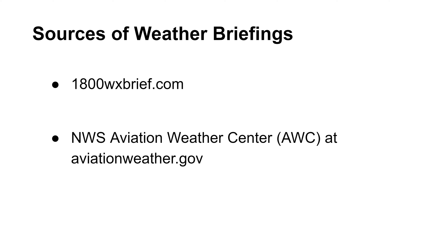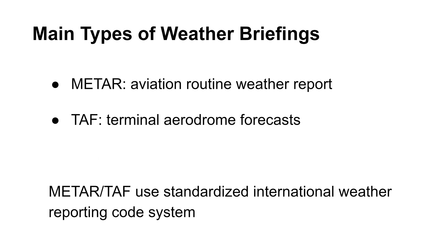The second source of weather reports is the NWS Aviation Weather Center at AviationWeather.gov. Both sources offer two typical types of weather reports: Aviation Routine Weather Report or METAR, and Terminal Aerodrome Forecast or TAF. Both METAR and TAF use the International Weather Reporting Code system in a standardized format.